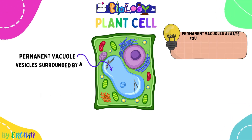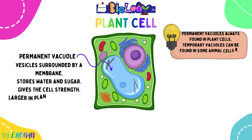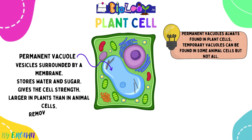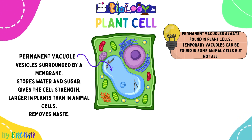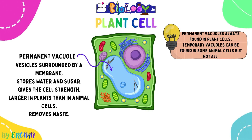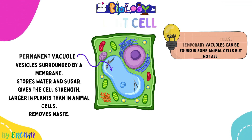The permanent vacuole is surrounded by a membrane. It stores water and sugar, gives cells strength, is larger in plants than in animals, and removes waste. Animals can have a temporary vacuole in some cells, not all — plants have a permanent one. This will also be important when you study amoeba and osmoregulation with the contractile vacuole later on.